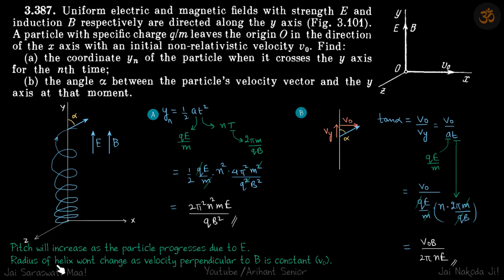Second point is radius of the helix will not change as velocity perpendicular to B is constant which is v0. The velocity in x direction v0, as it turns the total magnitude perpendicular to y direction will not change.